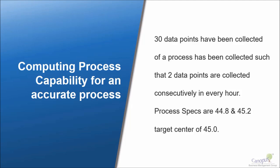In this scenario, we have 30 data points of a process that have been collected in such a manner that two data points fall consecutively to each other every hour. So let's say I have the first hour of production, which is between 9 to 10 a.m.